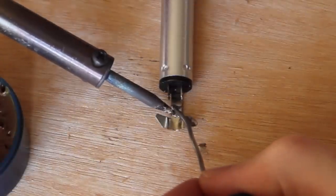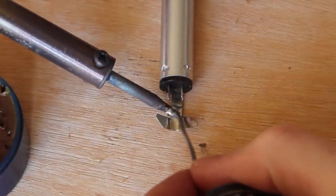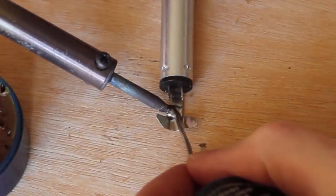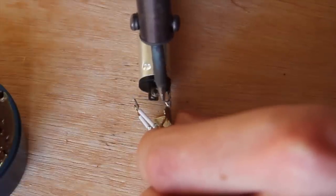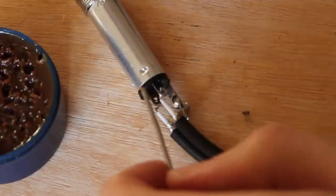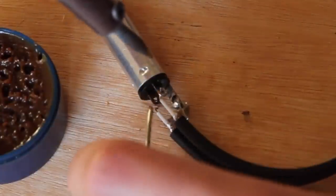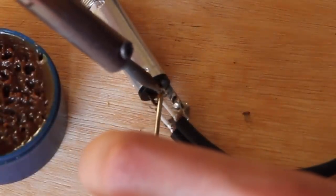Now solder the twisted ground cable to the ground connector of the stereo jack. Solder each signal cable to the signal pins.